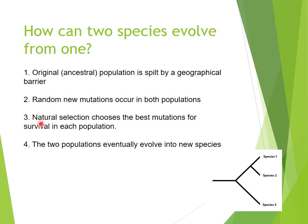Step two: random mutations happen in both populations on either side of the geographical barrier. Step three: natural selection chooses the best mutations for survival in each population. If one area is drier and one is moister, natural selection favors surviving in drier conditions on one side and moist conditions on the other. The mutations that help survival get passed on; those that don't, don't. Give that enough time — thousands to hundreds of thousands of years — and the two populations eventually evolve into new species.